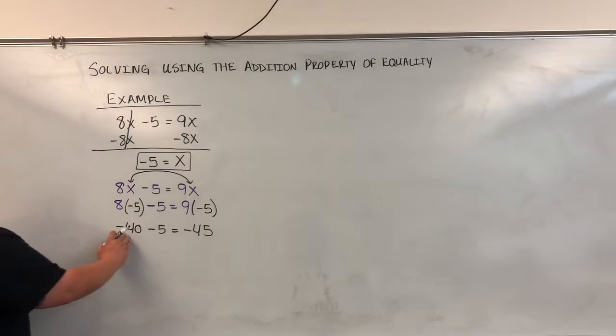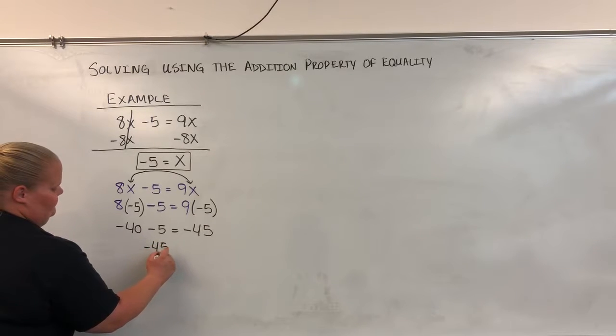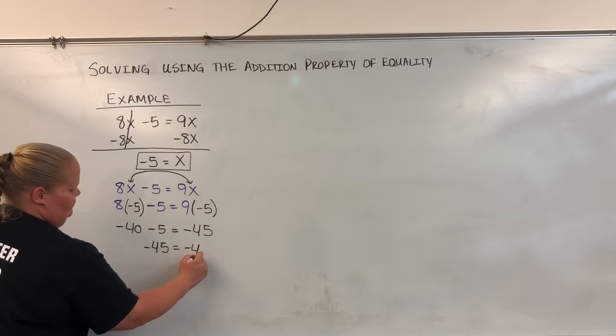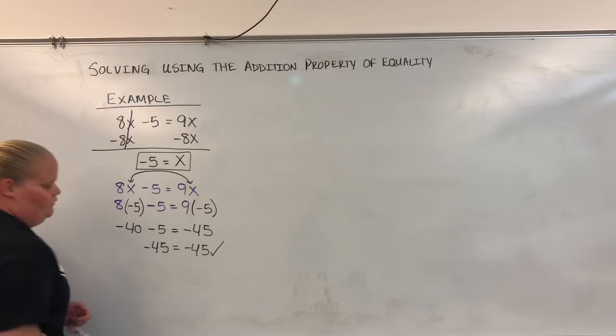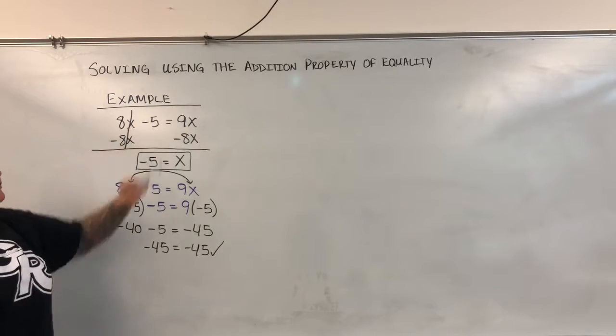Now, negative 40 minus 5, that's negative 45. Now both sides equal each other, which means that negative 5 is the solution to our original equation.